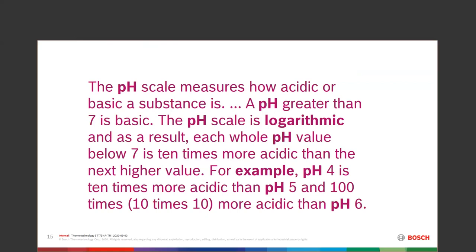The pH scale measures whether water is acidic or alkaline. Greater than 7 is basic/alkaline; below 7 is acidic. It's a logarithmic scale — each whole value below 7 is ten times more acidic than the next higher one. So a pH of 4 is ten times more acidic than 5, a hundred times more than 6, and a thousand times more acidic than 7. Going from 7 down to 4 doesn't sound like a big jump, but it means the water is corroding things a thousand times faster.